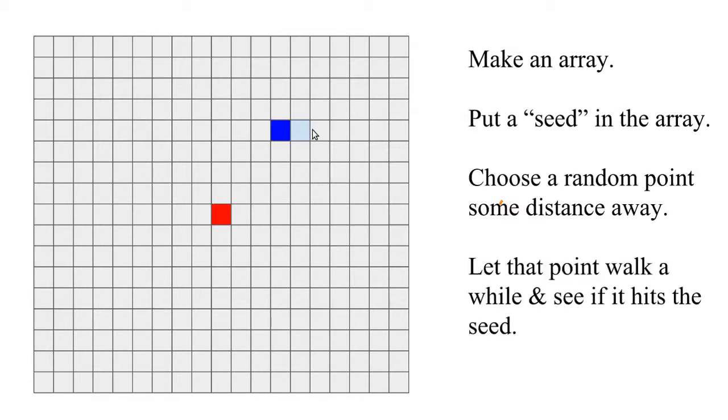So it's moving around, and we're seeing, does it ever hit the seed? So is one of its neighbors a one? If it is, then it sticks and it becomes part of the seed. And after that, we can choose another location and let it walk.